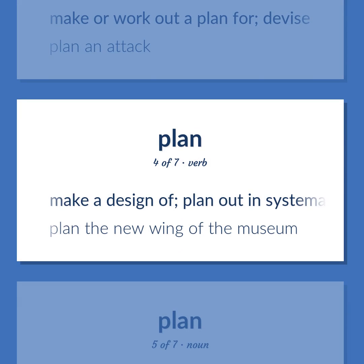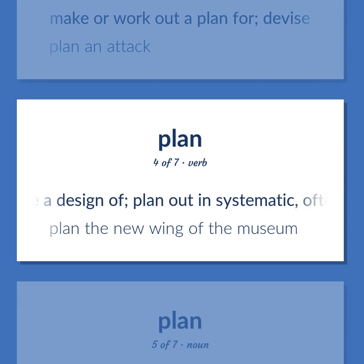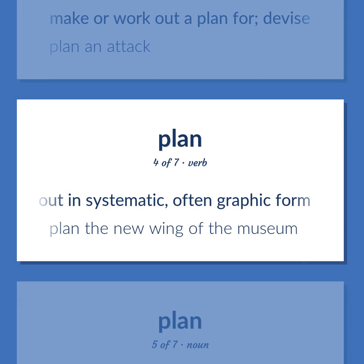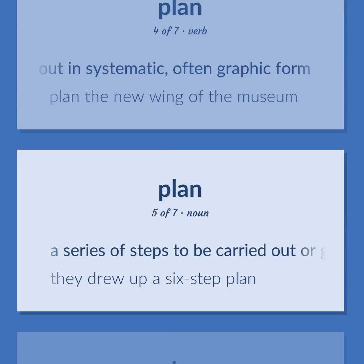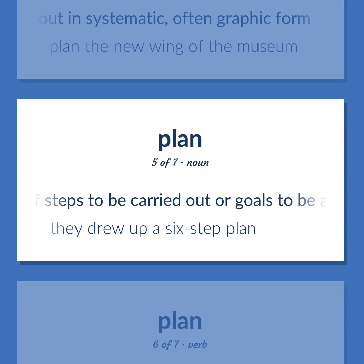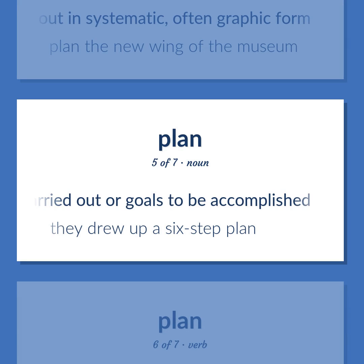Plan: Make a design of; plan out in systematic, often graphic form — plan the new wing of the museum. A series of steps to be carried out or goals to be accomplished — they drew up a six-step plan.